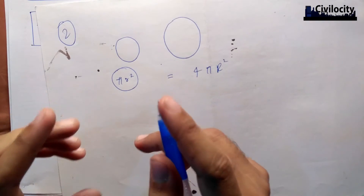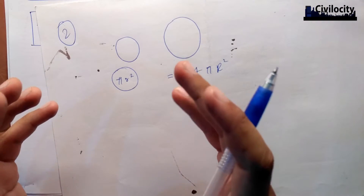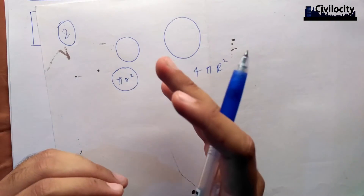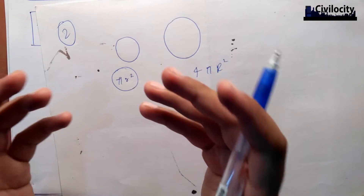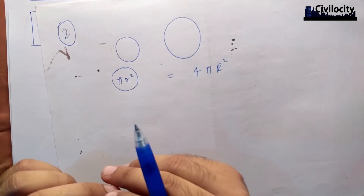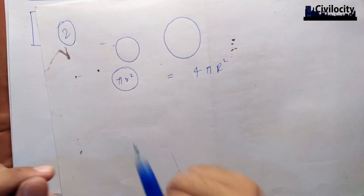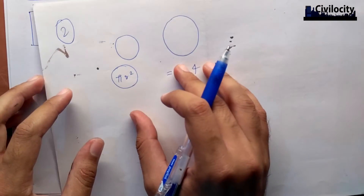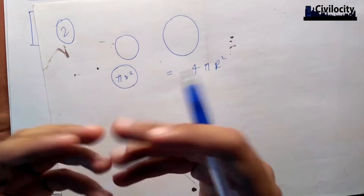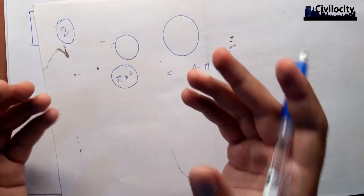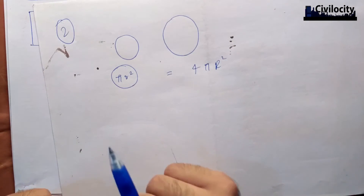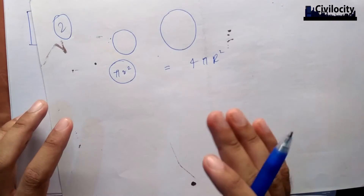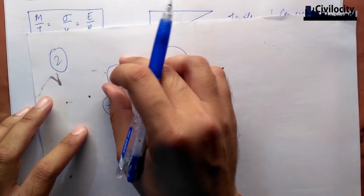Have we ever had the cross-section, beam size, beam material, or beam dimensions affect the shear force diagram or bending moment diagram? No — the shear force diagram and bending moment diagram depend only on load and distance. They are not affected by cross-section properties.